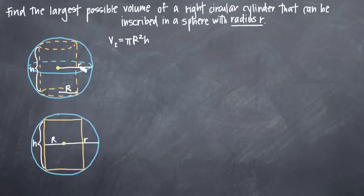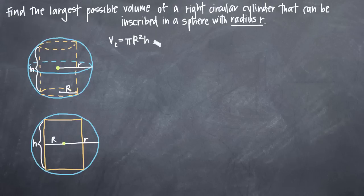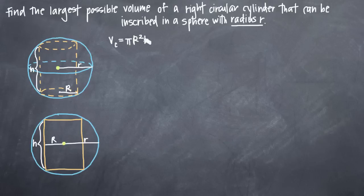So we've drawn a picture, and we've also written down the formula for the volume of the cylinder. We know that we're going to have to find the largest possible volume of the right cylinder. The volume of the cylinder, V sub c, is equal to pi capital R squared times h — capital R squared because the radius of the cylinder is capital R. Now we need to identify optimization and constraint equations.